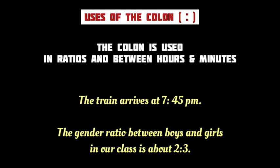Last but not the least, the colon is also used in ratios and between hours and minutes while telling the time. For example: 'The train arrives at 7:45 pm' — note the use of the colon between 7 hours and 45 minutes. And the gender ratio between boys and girls in our class is about 2:3, with the colon mark symbolizing the ratio.